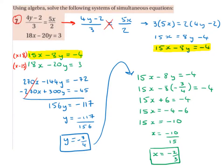The first thing we want to do is rewrite this equation without the fractions. What we're going to do is cross multiply. We're going to say 4y minus 2 multiplied by 2.